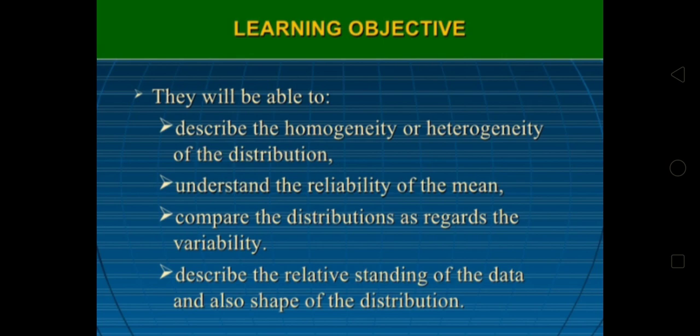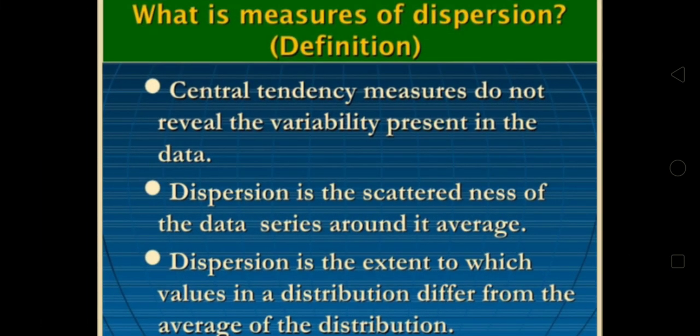What is measure of dispersion? According to definition, central tendency measures don't reveal the variability present in the data. Dispersion is the scatteredness of the data series around average.